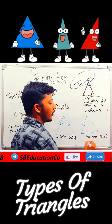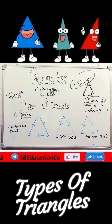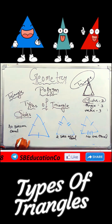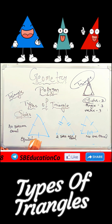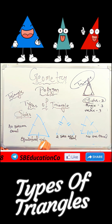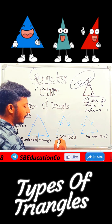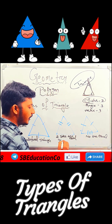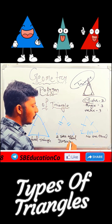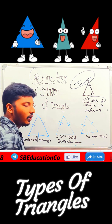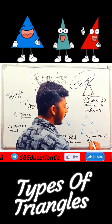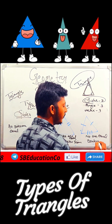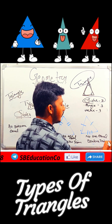If three sides are equal in a triangle, we will say that it is an equilateral triangle. If two sides are equal in a triangle, we will say that it is an isosceles triangle. If no sides are equal in a triangle, we will say that it is a scalene triangle.